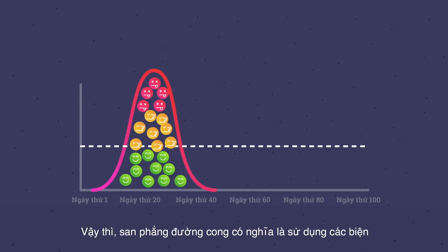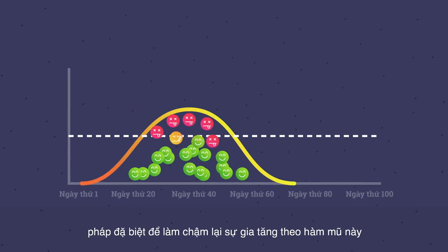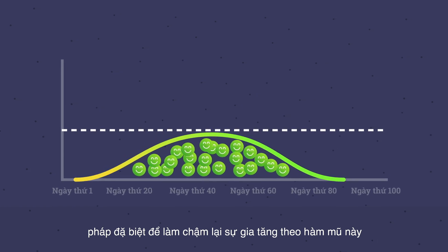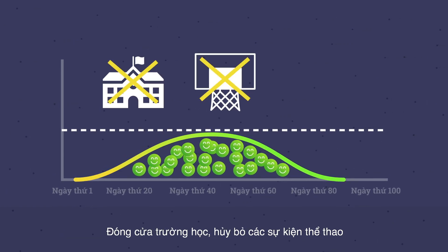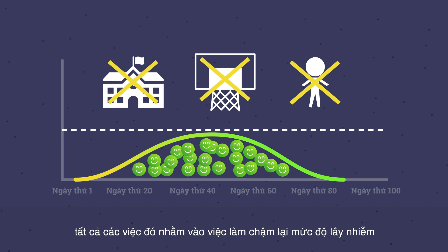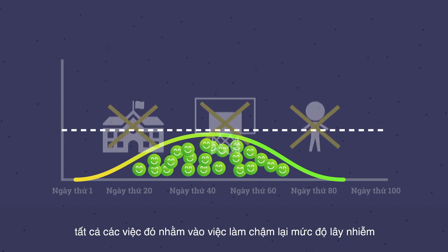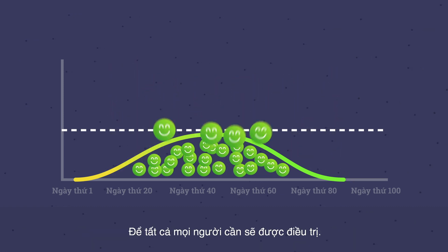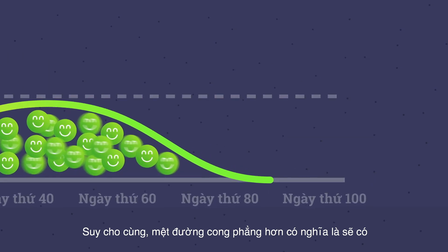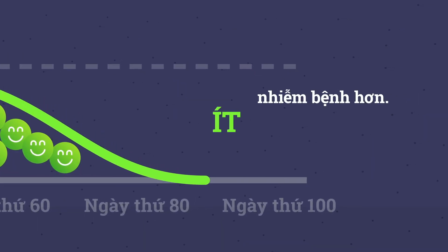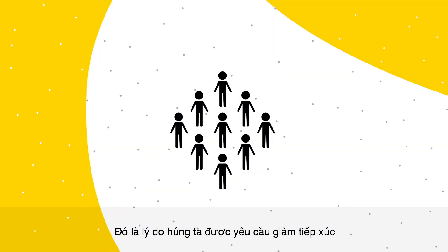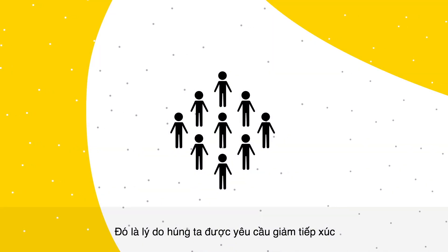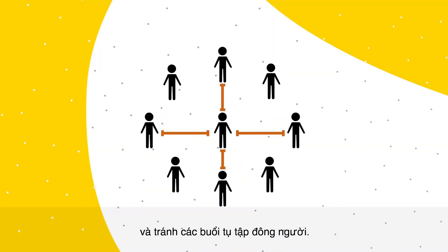Flattening the curve means using extreme measures to slow this exponential growth. Closing schools, canceling sport events, and stopping movement of people is all meant to slow the infection rate, so those who need care can get it. In the end, a flatter curve means that fewer people will get infected, fewer get sick, and fewer will die.